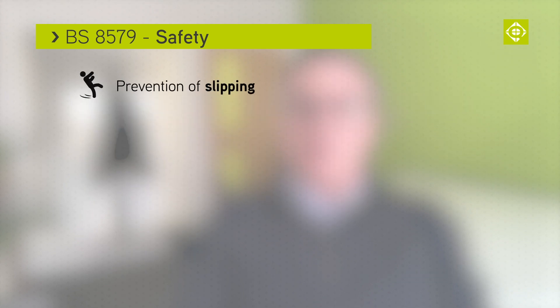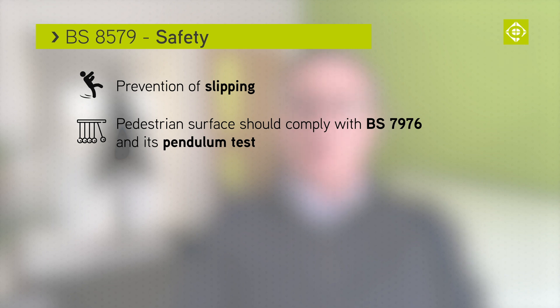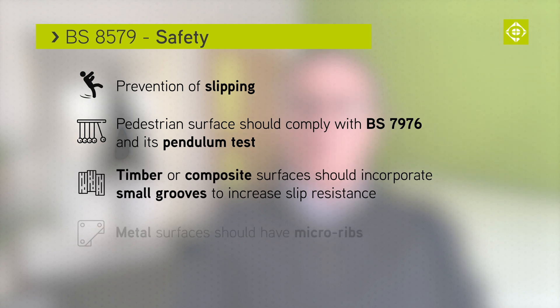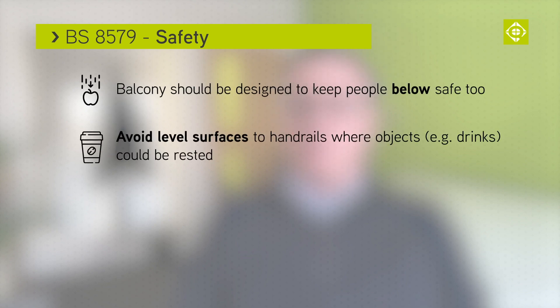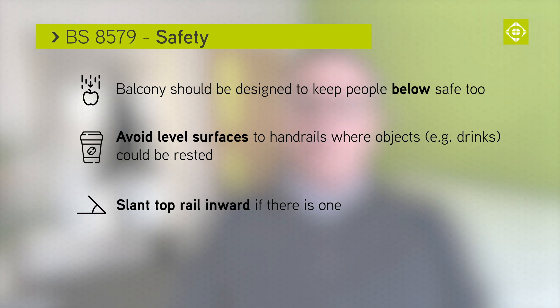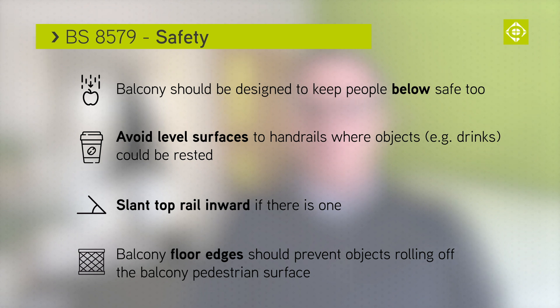To prevent slipping, the pedestrian surface should comply with BS 7976 and its pendulum test. Timber or composite surfaces should incorporate small grooves to aid slip resistance. Metal surfaces should have micro ribs. Concrete and natural stone may have inherently better slip resistance, although this should be assessed in individual cases. Also bear in mind that the balcony should be designed to keep people below safe too — so avoid level surfaces to handrails where drinks could be rested. Where there is a top rail, slant it inwards. The edges of the balcony floor should also prevent objects rolling off the balcony's pedestrian surface.